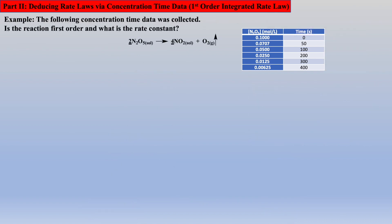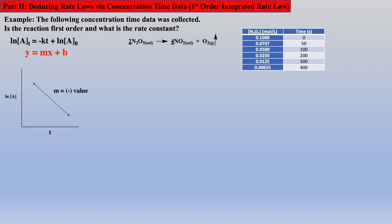So how would we see this data in the word problem, and what would be asked of us? Well, you could be asked to simply prove this reaction as first order, and if so, what is the rate constant? If it is first order, it will follow the linearized form of the integrated first order rate law, where a plot of the natural log of N2O5 concentrations versus time will be a straight line. Conversely, if a straight line is not obtained, one would have proven it is not first order.